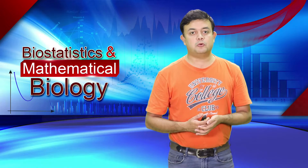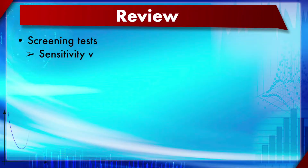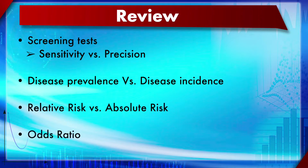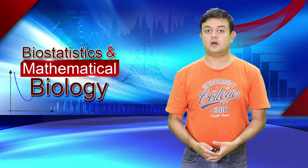In epidemiology, proportions are quite often used. For screening tests, two important terms are sensitivity and specificity, which are seemingly similar but convey very different meanings. Also related are disease prevalence and disease incidence, as well as relative risk versus absolute risk, and odds ratio - these will be covered in the next section of this module.